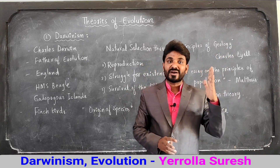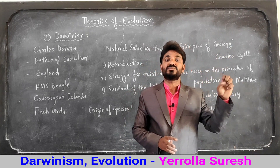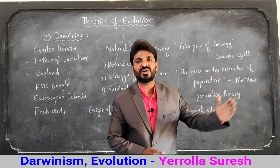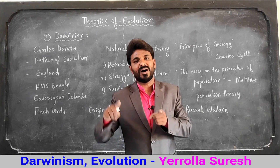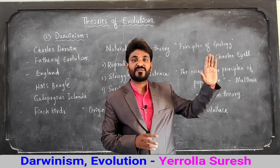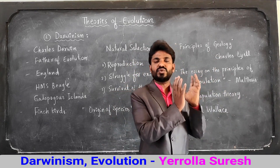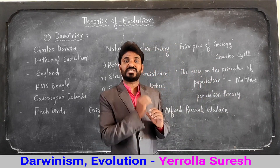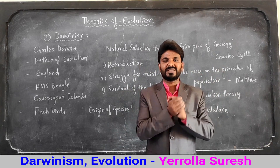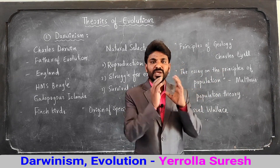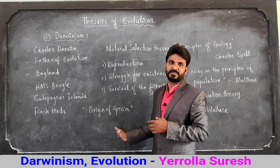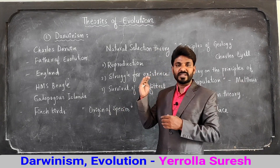In every generation, stronger characters are passed on to the next generation. From that, even more stronger organisms get selected, and weaker organisms get eliminated. After so many generations, all these useful variations lead to the formation of new species or new organisms — that is called macro evolution. Darwin wrote about how new organisms are formed in his book 'Origin of Species.'